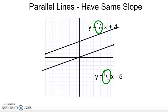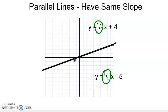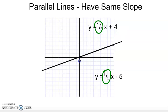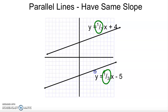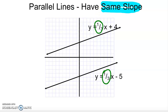Now we're going to talk about parallel and perpendicular lines. Parallel lines have exactly the same slope. So if the slope is 1 third and I move this line up or down, the 1 third tiltiness of the slope stays the same — only the b changes. So 1 third x plus 4 moves up, and 1 third x minus 5 moves down. The key concept: parallel lines have the same slope.